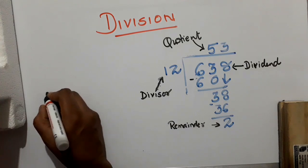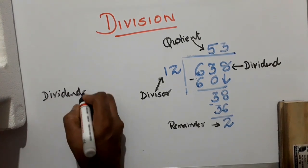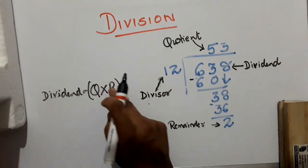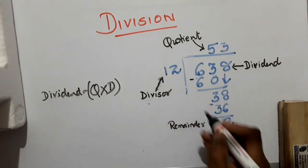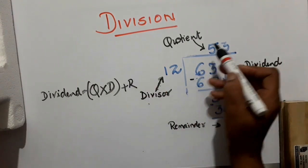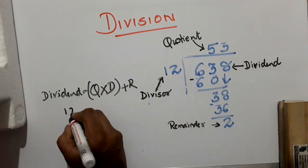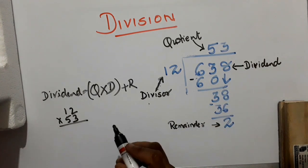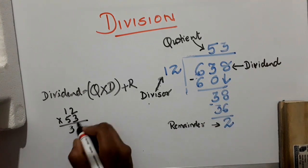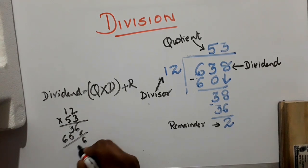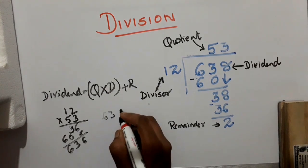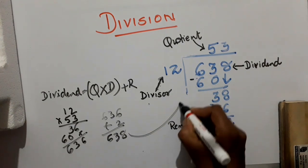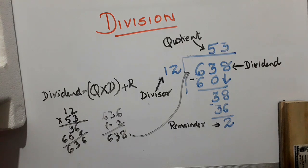What is the division algorithm? The dividend equals quotient multiplied by divisor plus remainder. So when you multiply 53 into 12 and add the remainder, you should get the dividend and hence verify your answer. Here we get 636, and 636 plus 2 equals 638, which is your dividend. This way you can verify your answers.